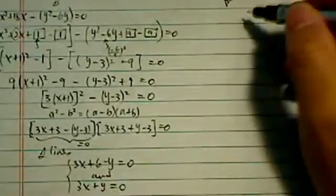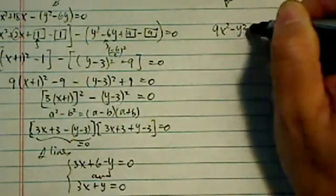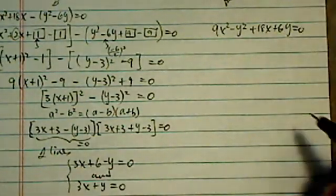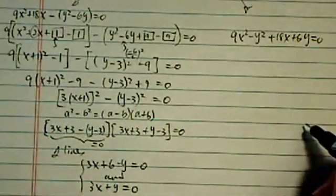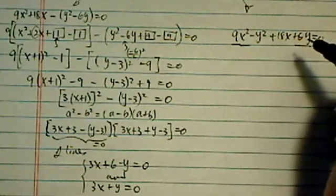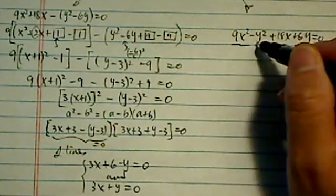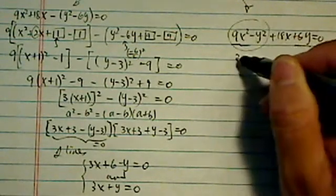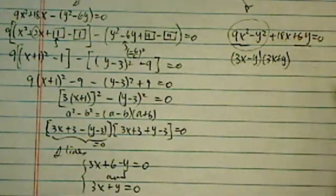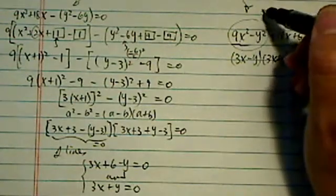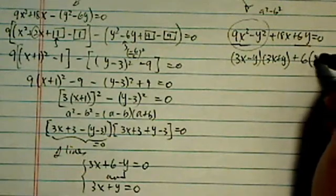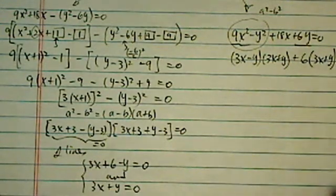Okay, shortcut. You have 9x squared minus y squared plus 18x plus 6y equal to zero. Now if you recognize this one, I regroup it a little differently. If you group those two together, you have 3x minus y times 3x plus y. This is again, it's a squared minus b squared form.